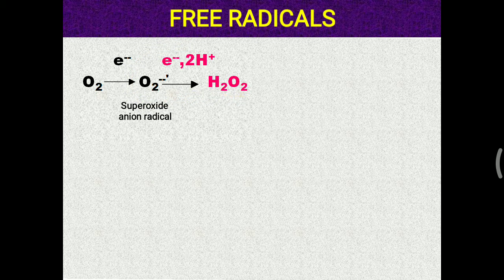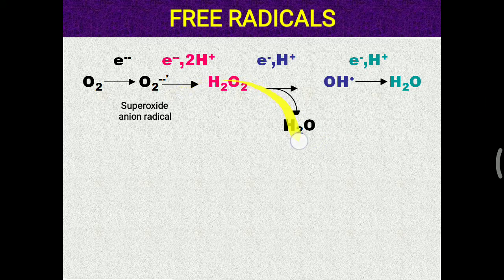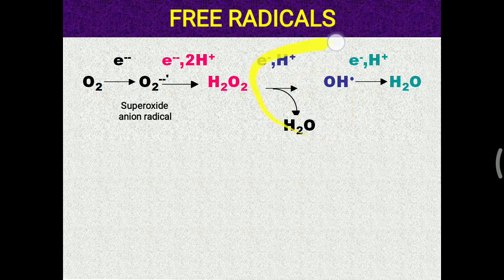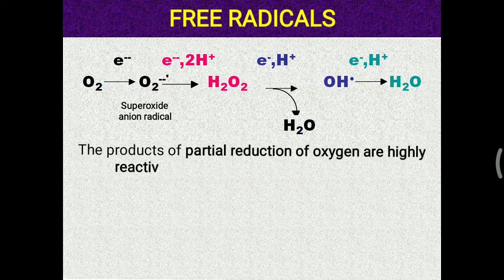The superoxide anion is further converted into H2O2, mostly by the enzyme superoxide dismutase, by adding an electron and proton. H2O2 is then destroyed and converted into water, but during that reaction a hydroxyl radical can be generated, which also needs to be destroyed with the help of an electron and H⁺ ion.